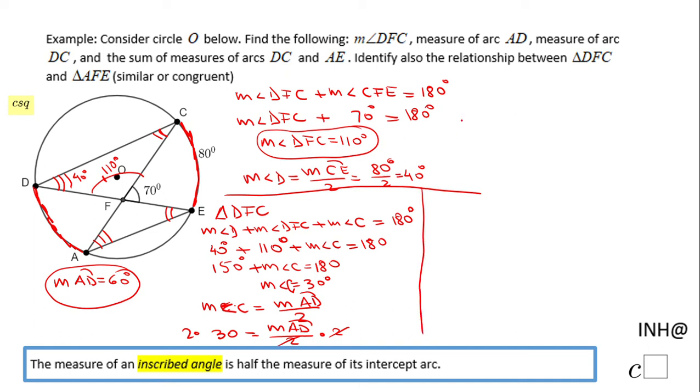Now moving to the picture, you notice this is 80 degrees, this arc AD is 60 degrees, we found out.